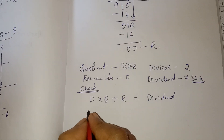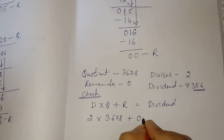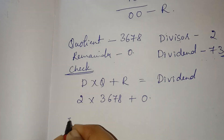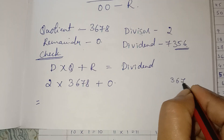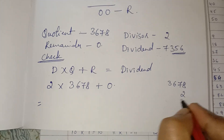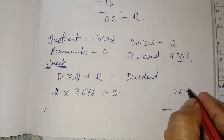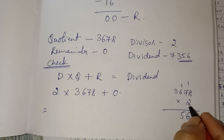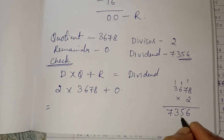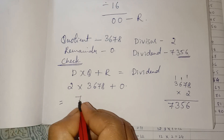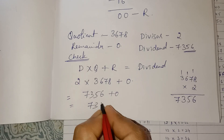Divisor is 2, quotient is 3678, remainder is 0. Multiply: 3678 into 2. 2 eights are 16; 2 sevens are 14 plus 1 is 15; 2 sixes are 12 plus 1 is 13; 2 threes are 6 plus 1 is 7. Result: 7356. Adding remainder 0 gives 7356.